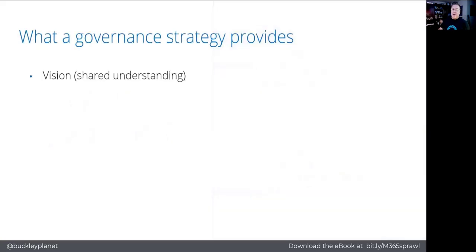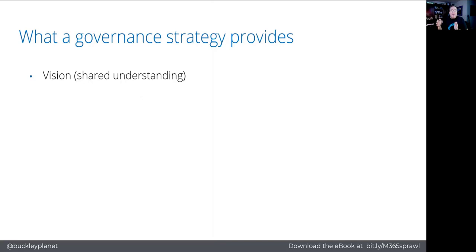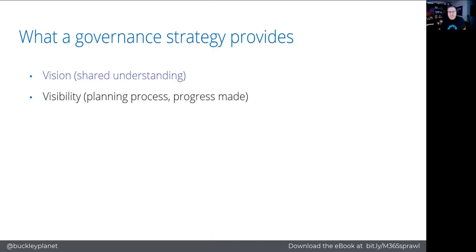What a good governance strategy provides: first is a shared vision and understanding — here are our constraints, here's what we have to do, here's what people need to be productive. People won't push back against rules when they understand why. The IT organization understands what people are actually trying to accomplish. The second part is visibility into the planning: here are the rules, here are the tools, the features, new additions, integrations, customizations, automation — provide visibility into that action plan.